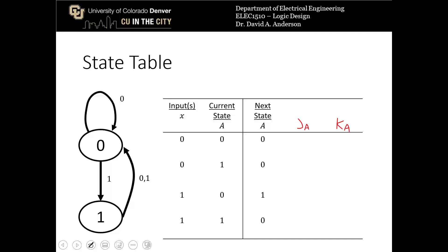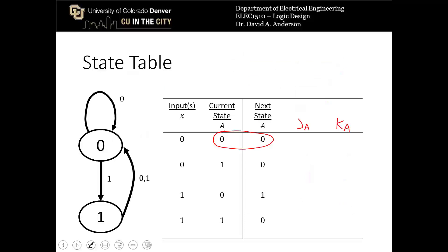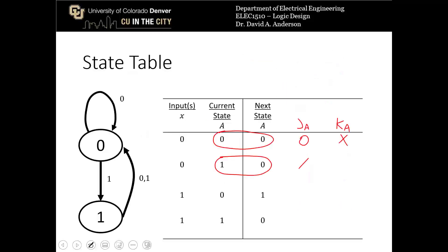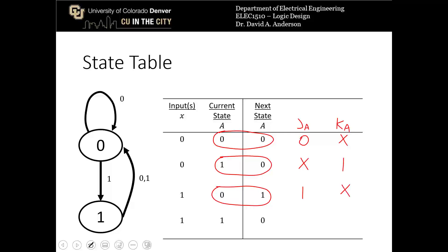To assign values for J_A and K_A, we look at how the current state transitions to the next state. The transition from 0 to 0 gives J=0 and K=X. The transition from 1 to 0 gives J=X and K=1. The transition from 0 to 1 gives J=1 and K=X. And the transition from 1 to 0 again gives J=X and K=1.